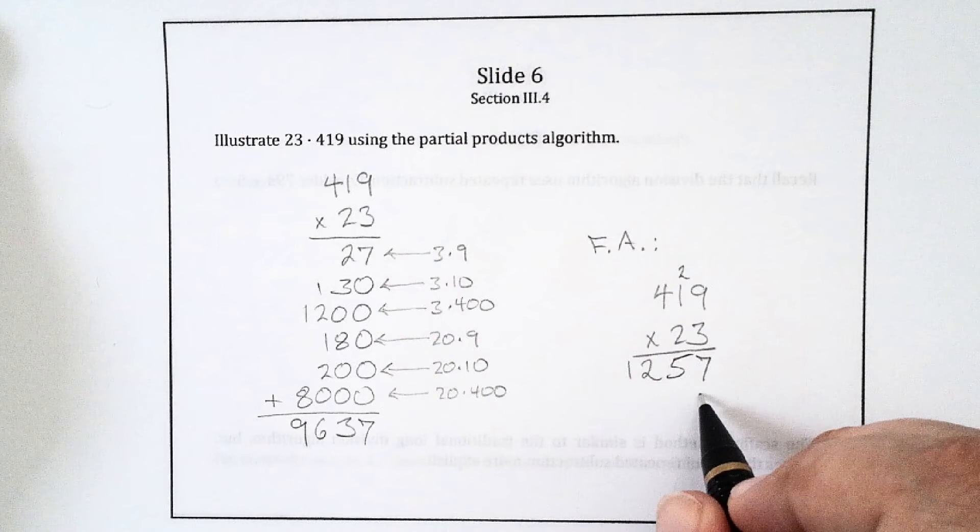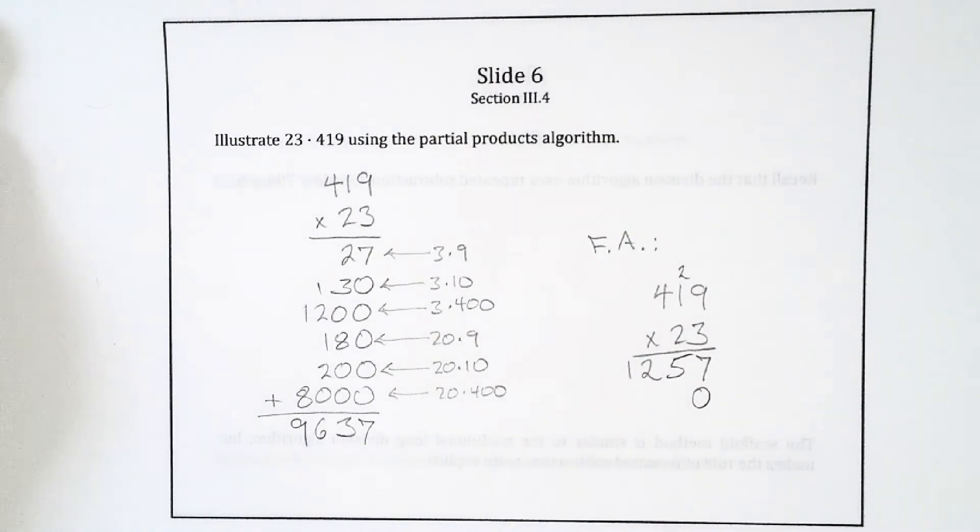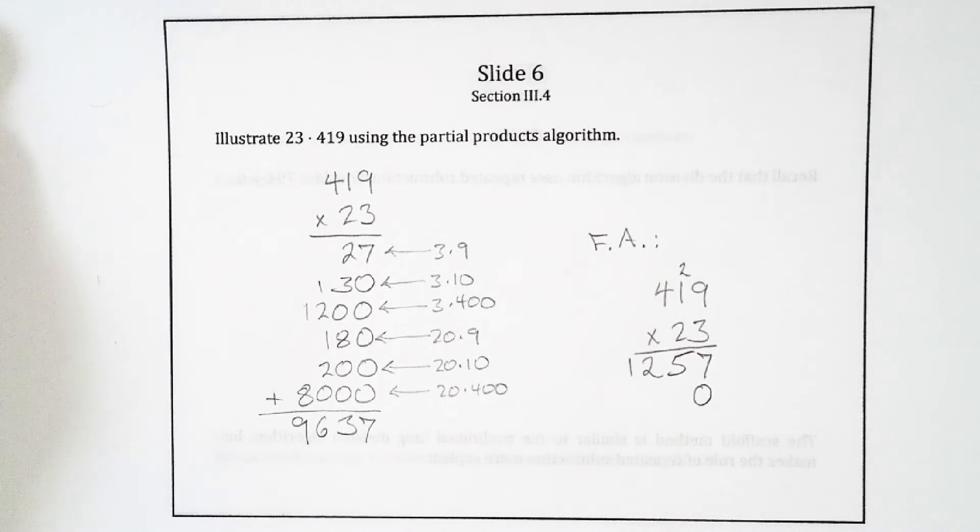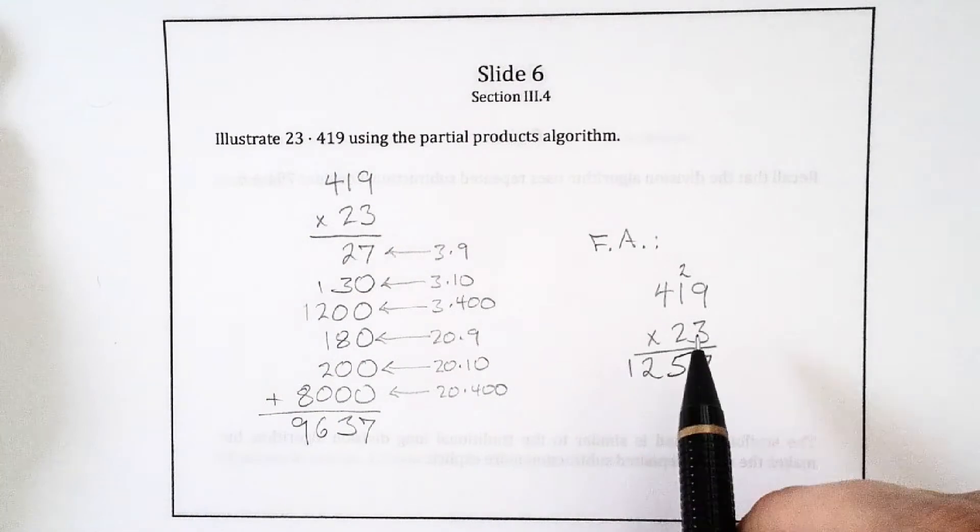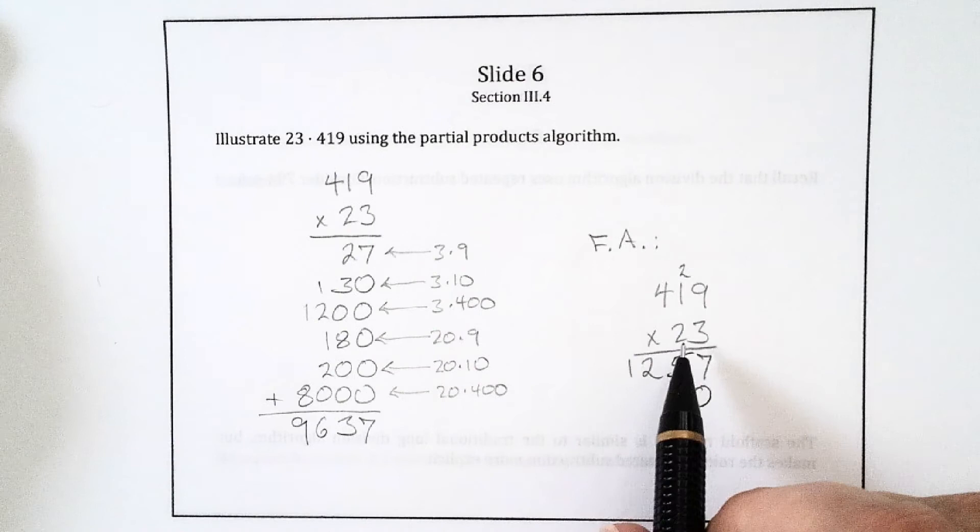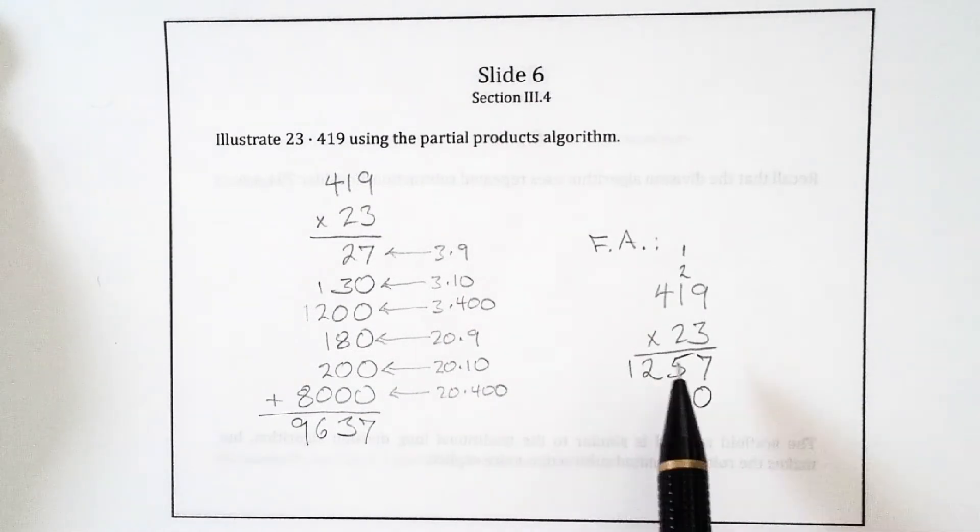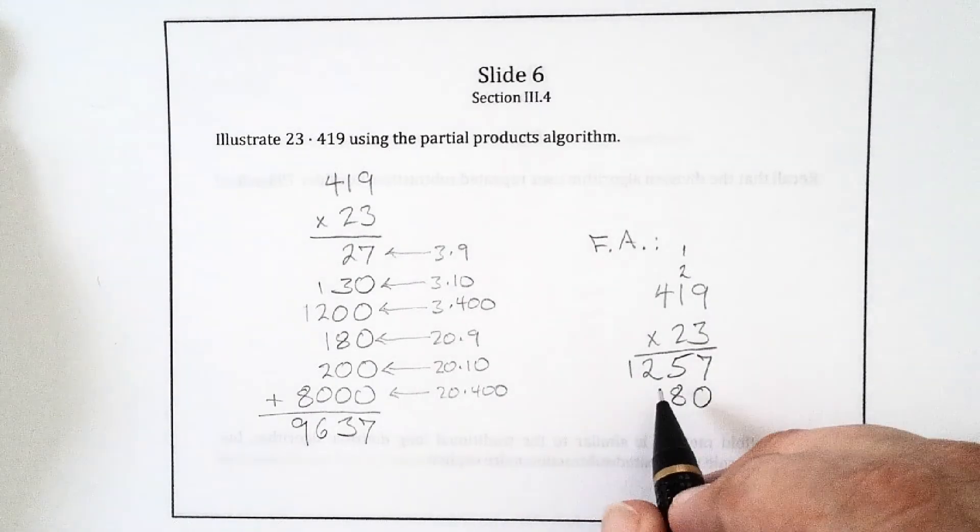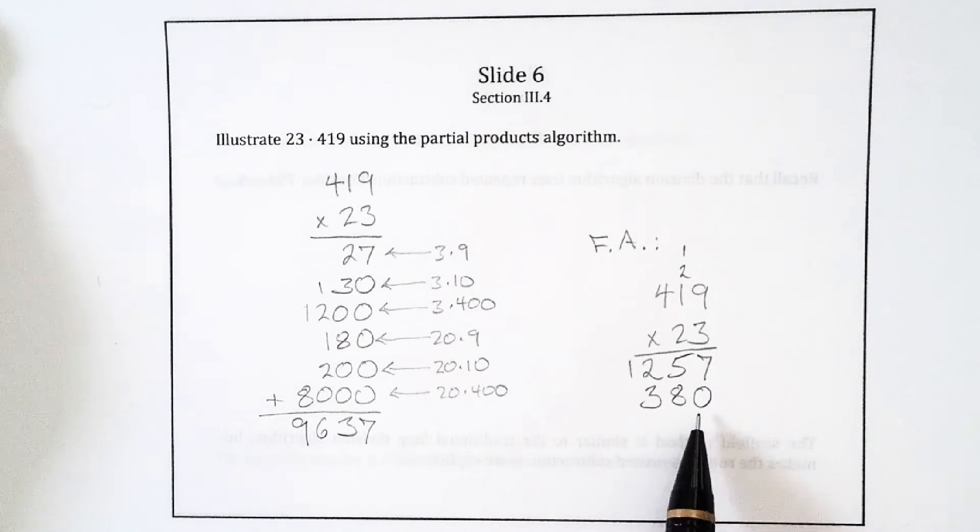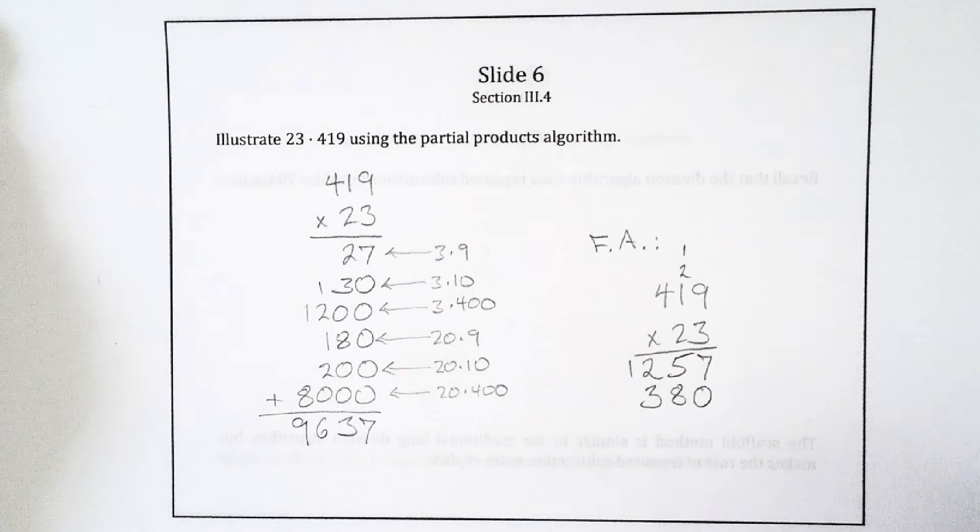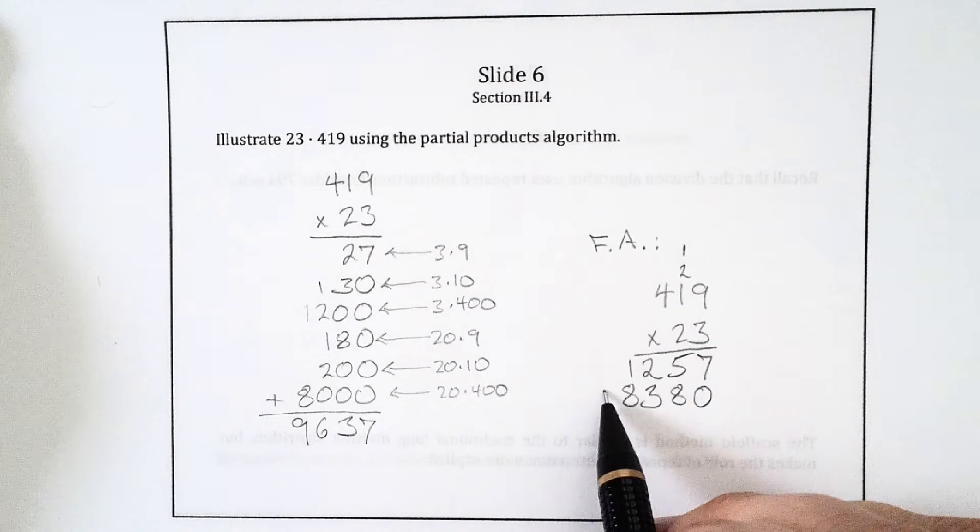Now I do 20 times 419. And I'm going to put a 0 here to remember that I'm really multiplying by 20, not by 2. Some teachers just leave a space, but I don't think that's a very good idea. I think it's better to actually put the 0 there because it holds its place and because it reminds the student that you're not multiplying by 2, you're multiplying by 20. Now I'll work through it. 2 times 9 is 18, so I put an 8, carry the 1. 2 times 1 plus 1 is 3, so that's 3 tenths, although the 0 reminds us it's really 300. And then 2 times 4 is 8, so that's 800.